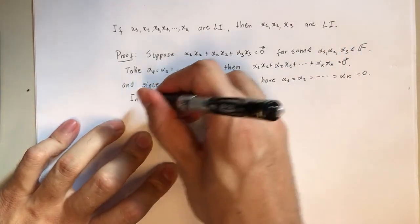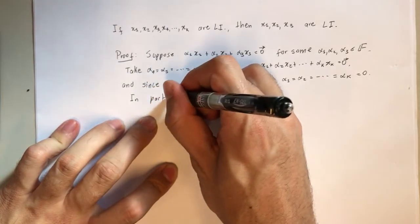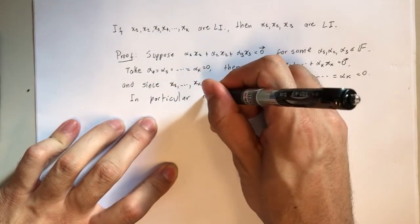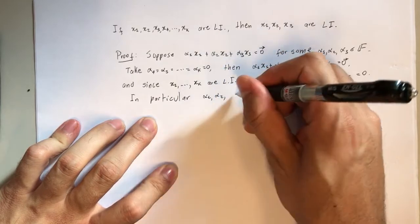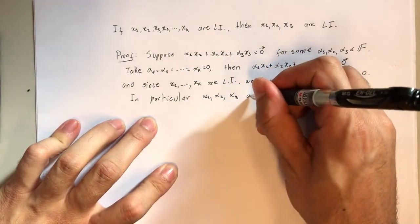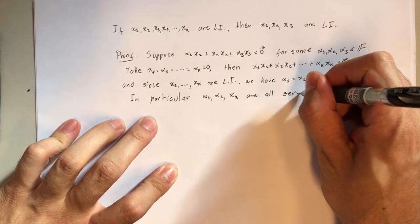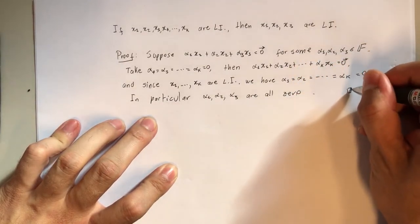in particular, alpha1, alpha2, alpha3 are all zero, and this completes the proof.